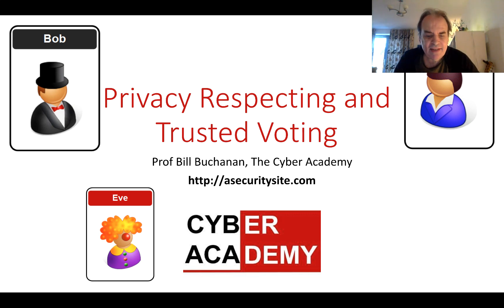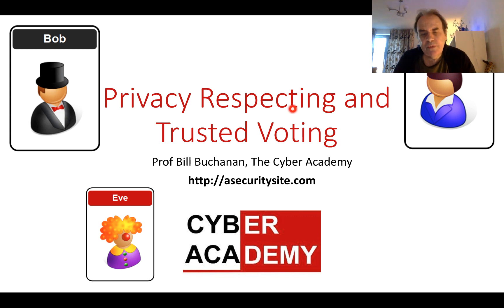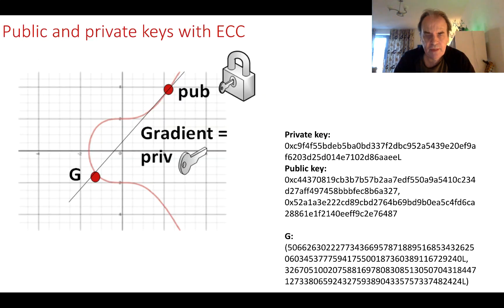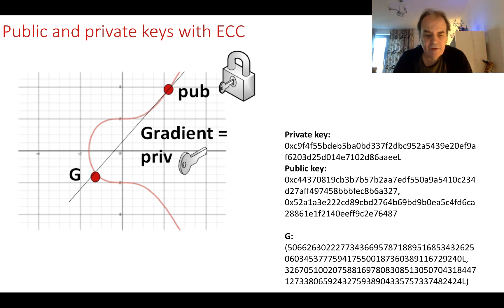Let's have a look at our privacy-respecting and trusted voting system. We'll be using zero-knowledge proof and oblivious transfer to be able to make sure that we can respect the rights to privacy for the voters. Before we start, we're going to implement the method with elliptic curve cryptography.